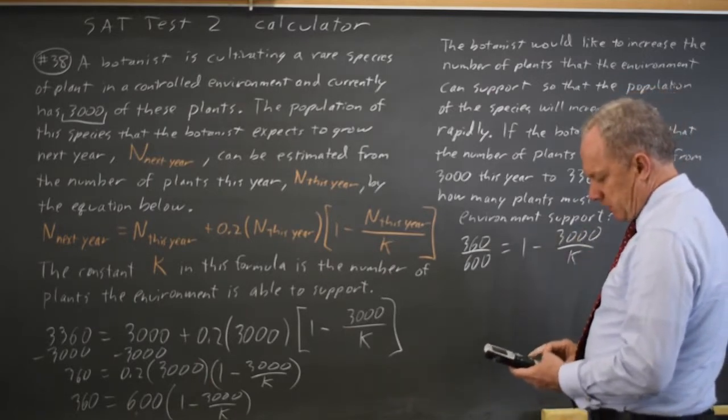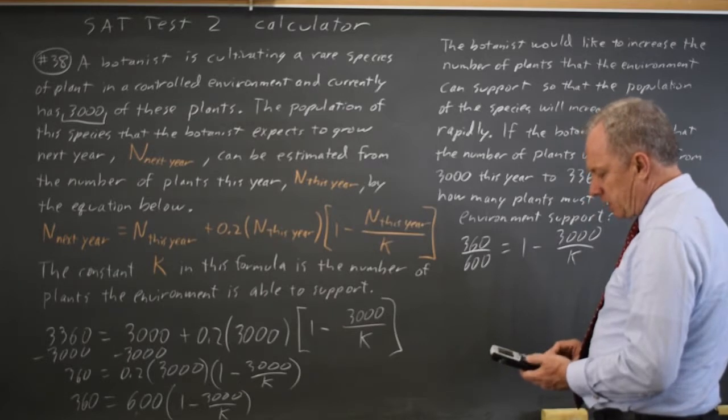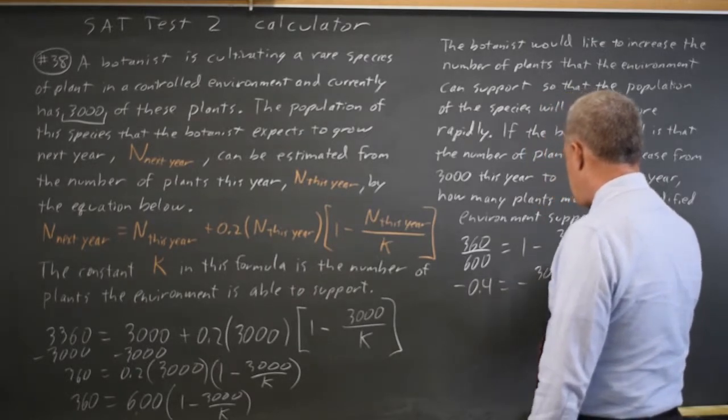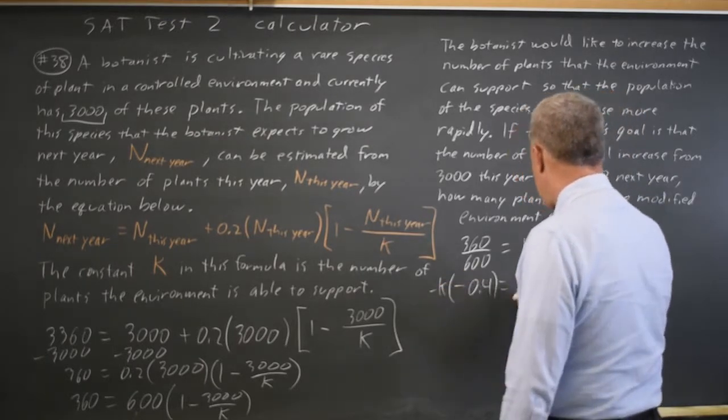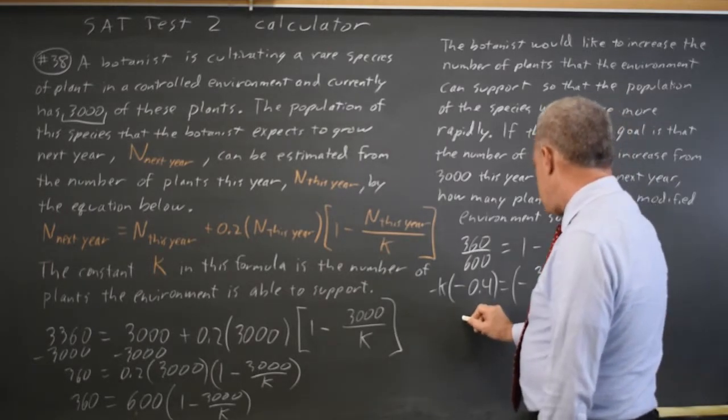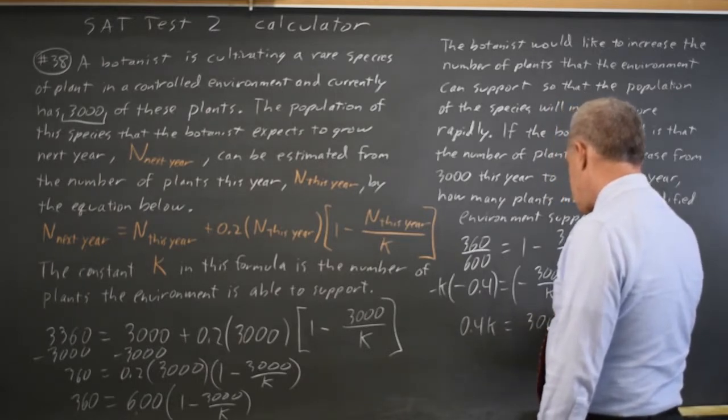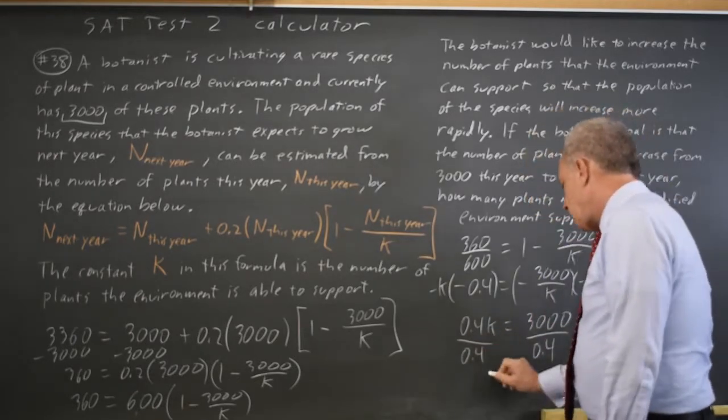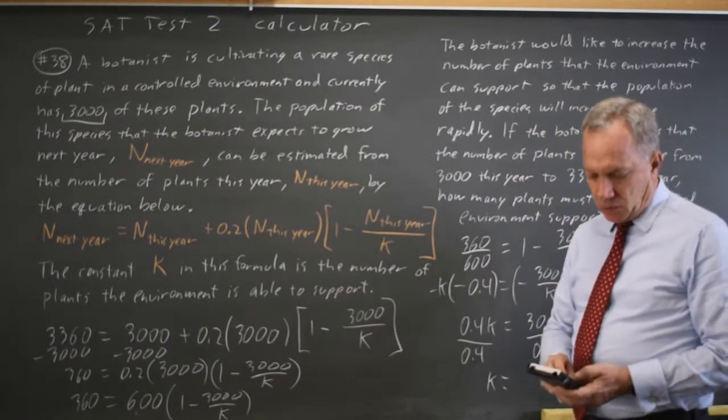If I subtract 1, 360 over 600 is 0.6. Subtract 1, I get negative 0.4, which equals negative 3,000 over K. Multiply both sides by negative K. And I get 0.4K equals positive 3,000. Divide both sides by 0.4. I get K equals 3,000 over 0.4, which is 7,500.